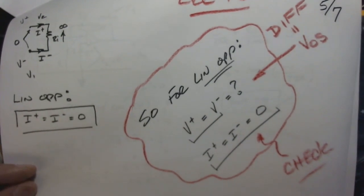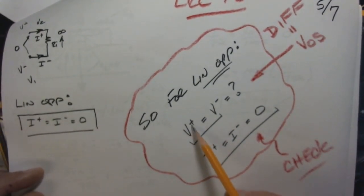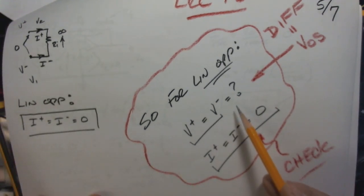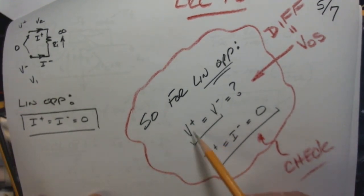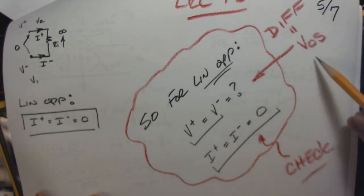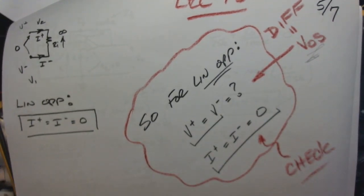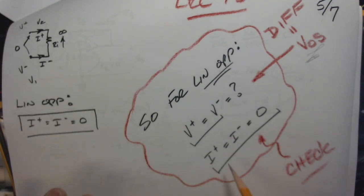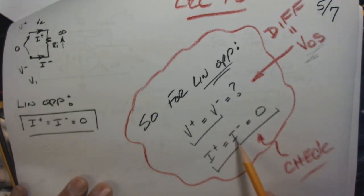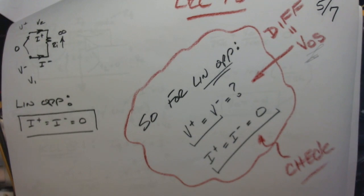As we've used in homework problems and test questions, we always had V+ equal to V−. Sometimes it was equal to zero, but we knew the difference between these two values was zero. That's our VOS. When I measure the difference between these two terminals, we'd expect it to be very close to zero. We're working in the practical here, so it may not be exactly zero, but it should be pretty small. Similarly, I+ equals I− equals zero in our analysis — again, not perfectly zero in practice, but pretty small in comparison.